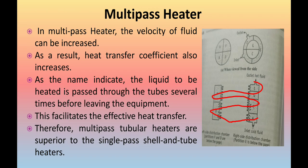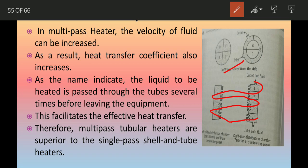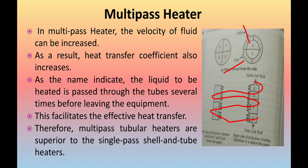Now let's talk about the working of the multipass heater. Steam is introduced through the connection into the space surrounding the tubes. As you can see, here is the inlet and here is the outlet. As the steam flows, the tubes get heated. The condensed vapor is drained, and non-condensed gases, if any, escape through the vent provided at the top of the casing.